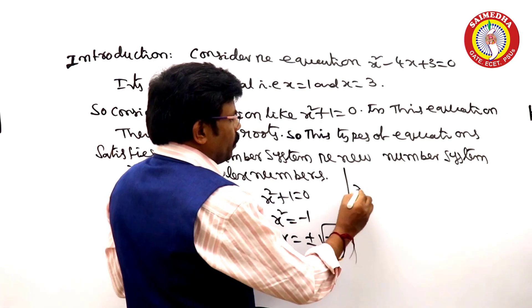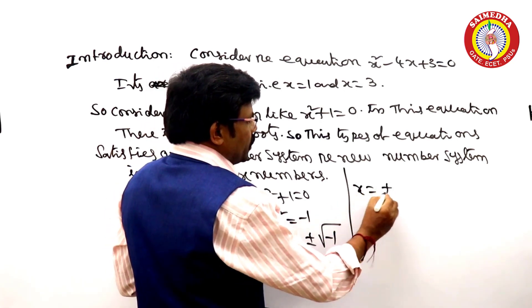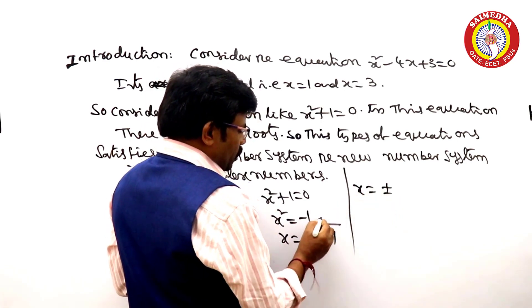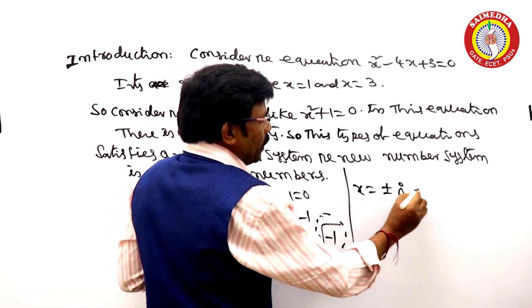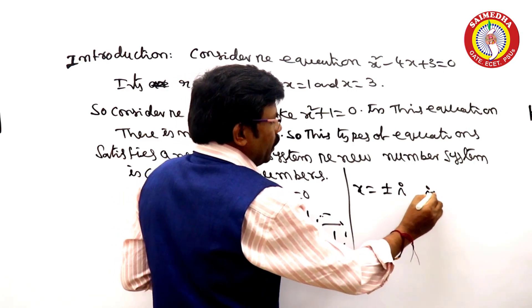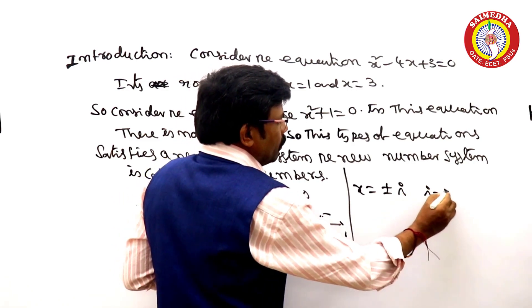So, x is equal to plus or minus square root of minus 1, meaning i — iota.